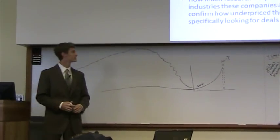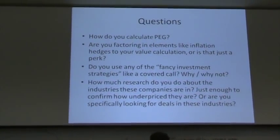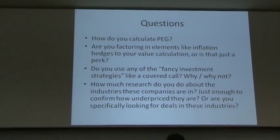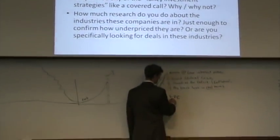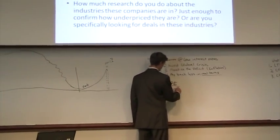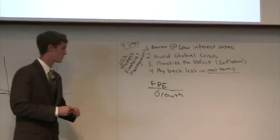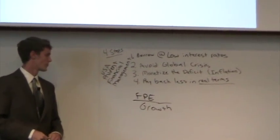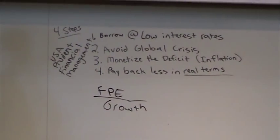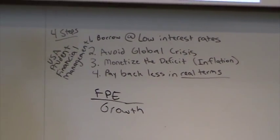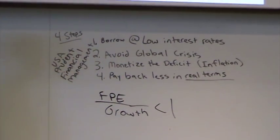So I've been asked how do you calculate the PEG — the price-earnings growth rate? Basically, it's your price-earnings ratio forward-looking, so I call that the forward PE, over your growth rate. And the goal is to have it less than one, because then when you buy, you can confidently say that you're going to make money.